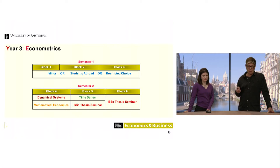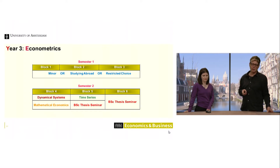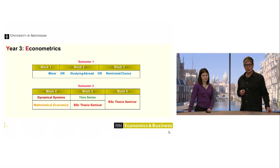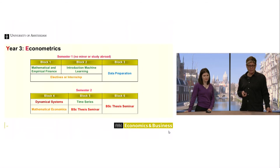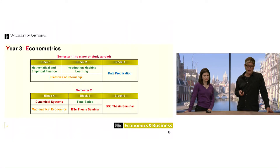In the second semester you're required back. From block five you get the Bachelor Thesis Seminar where you finalize your bachelor with your thesis. If you're not doing a minor or studying abroad, the structure has Mathematical Empirical Finance in block one, and courses related to big data — Introduction to Machine Learning and Data Preparation — in blocks two and three.